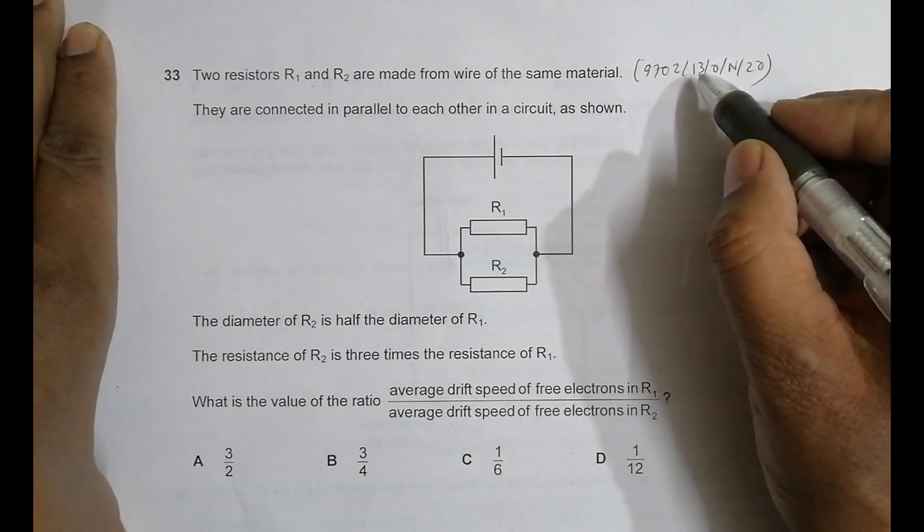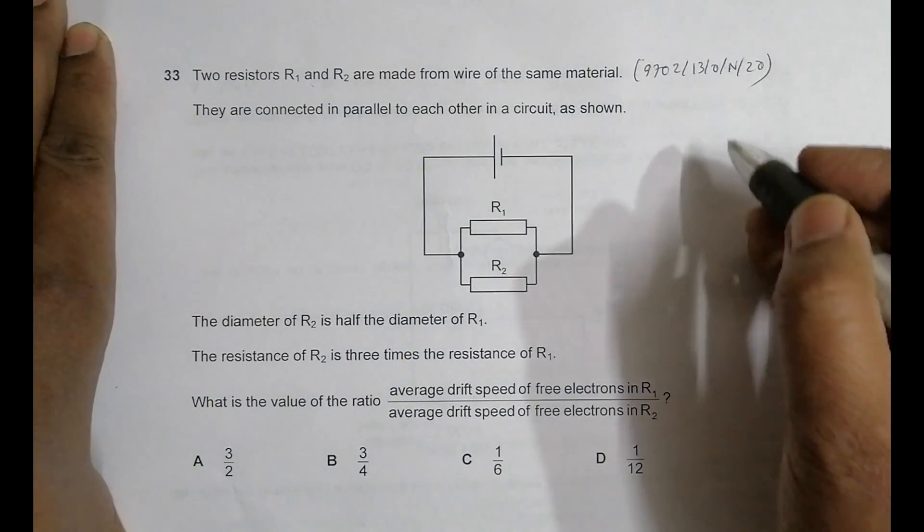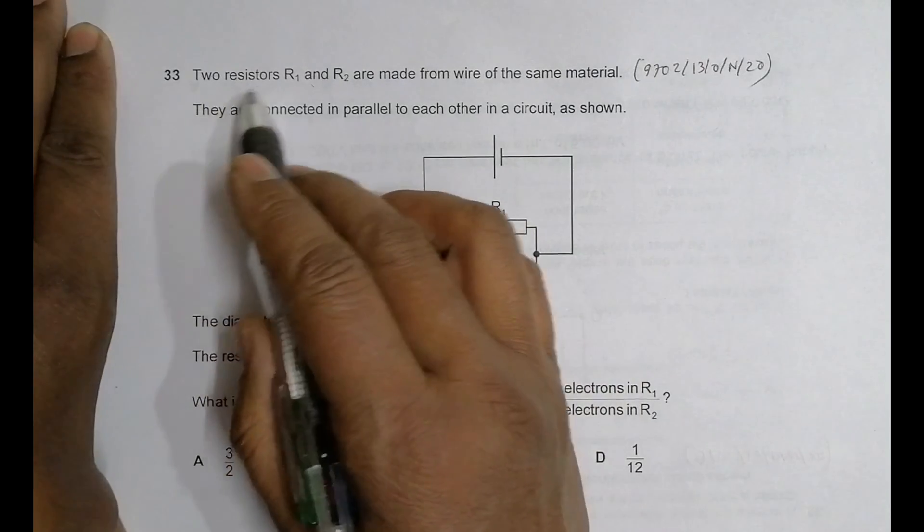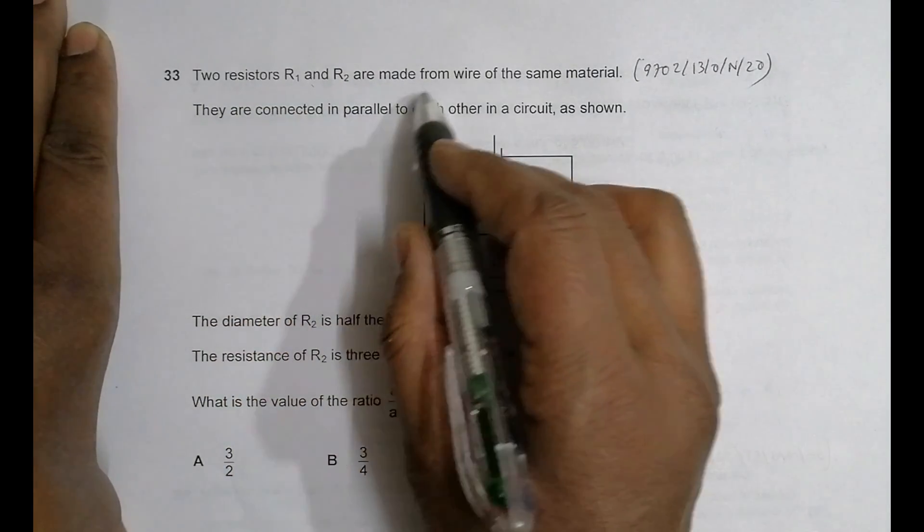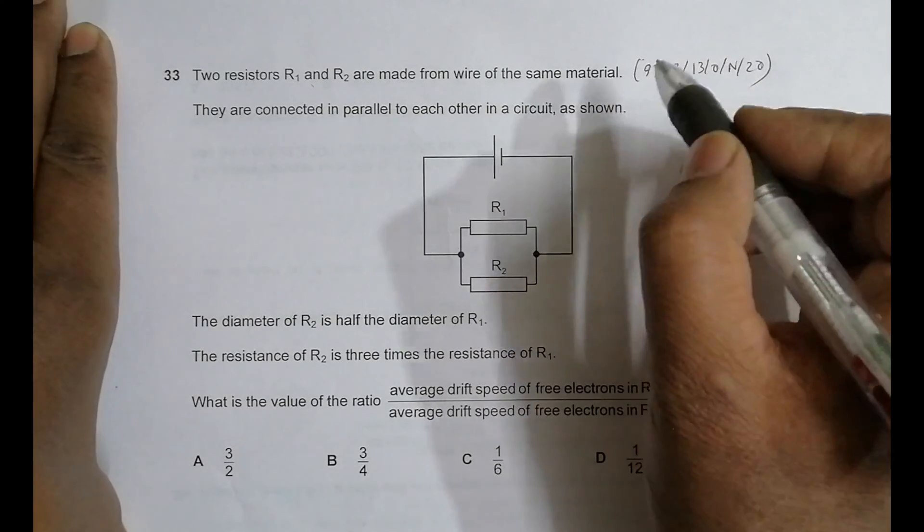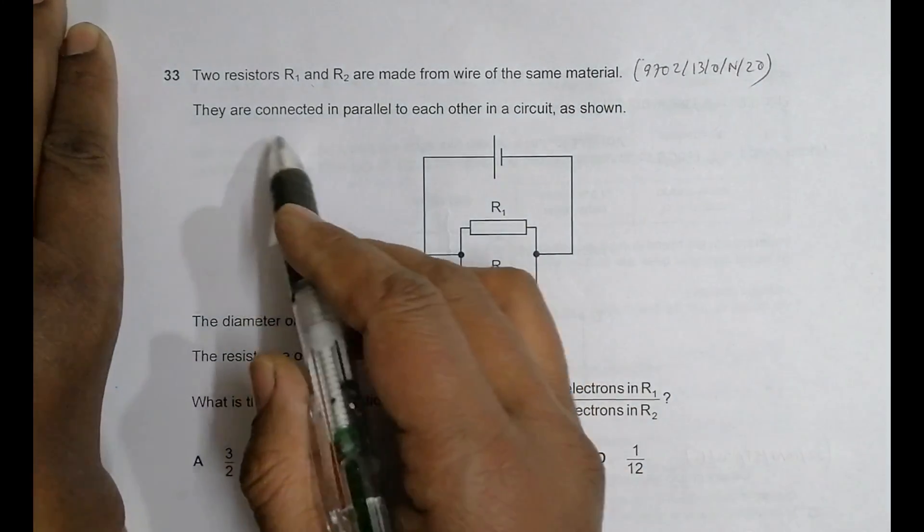Hello folks, this is 2020 October November paper 1-3, question number 33. The question is concerned with the chapter current electricity. As you can see from the diagram here, two resistors R1 and R2 are made from wire of same material, so their resistivity is the same.